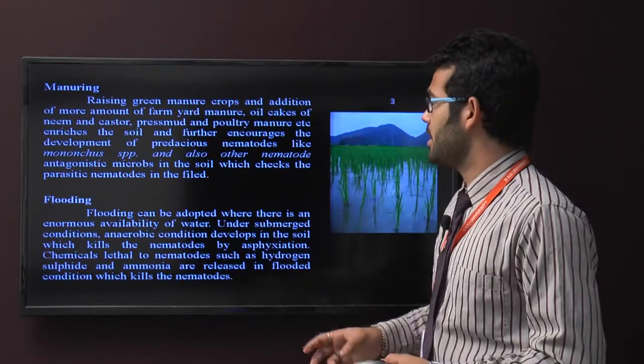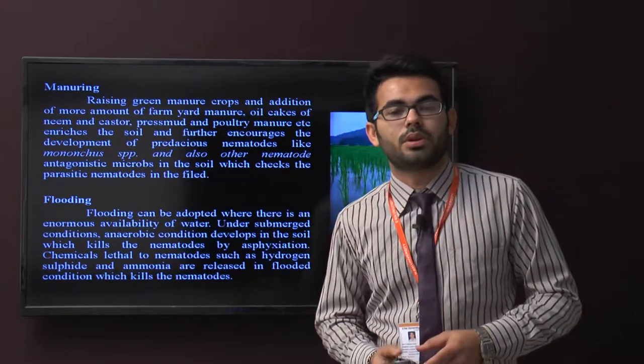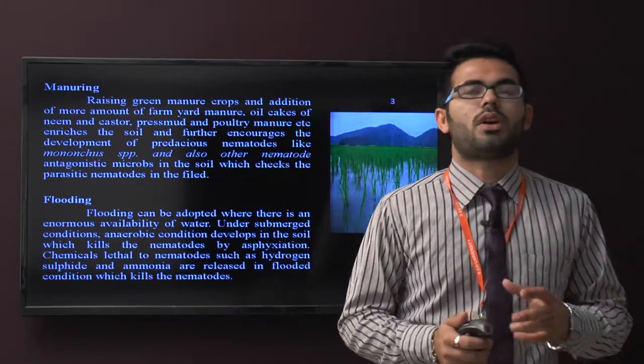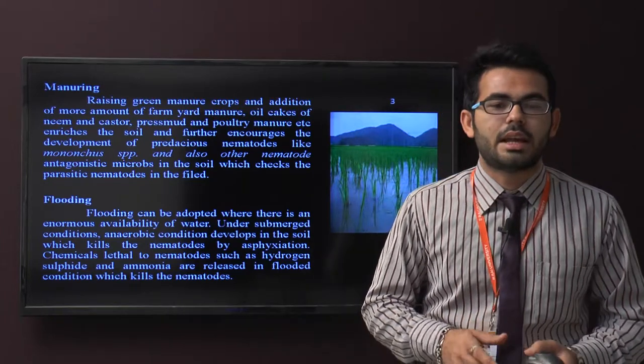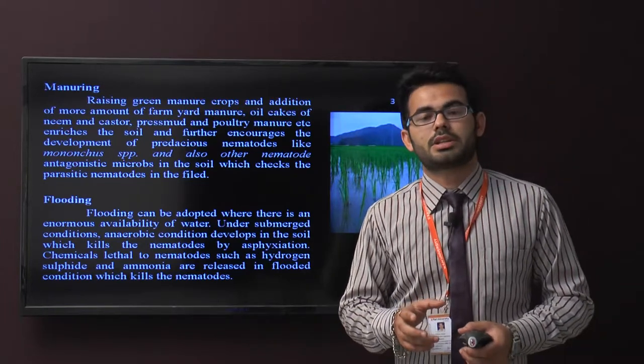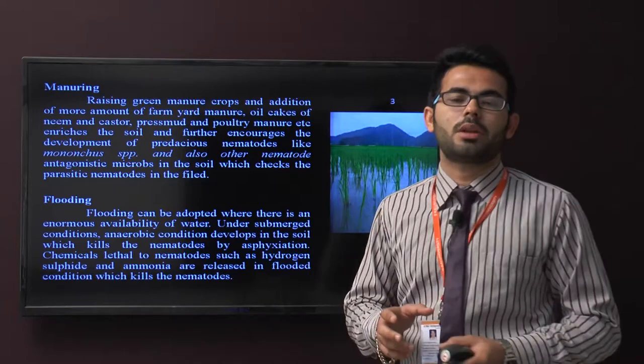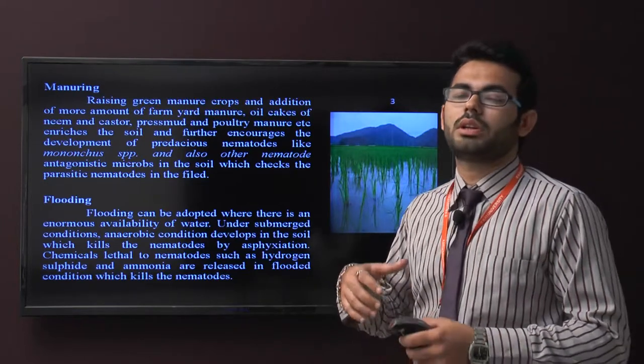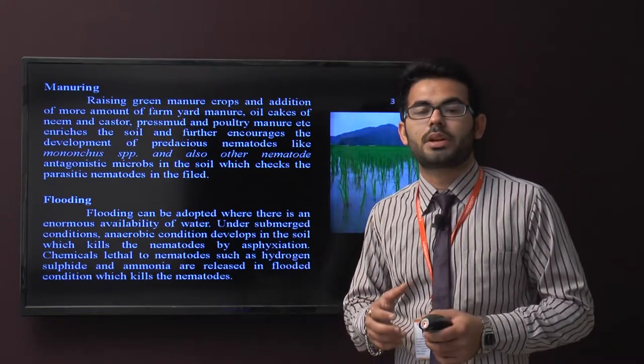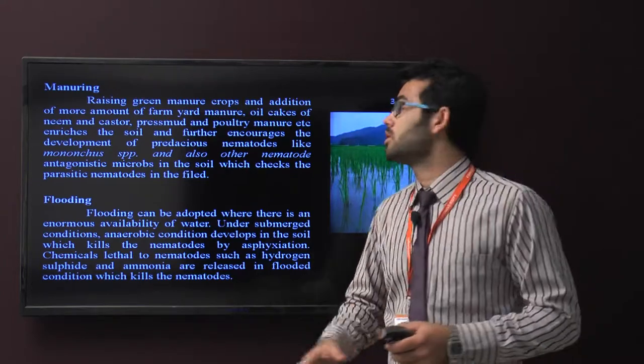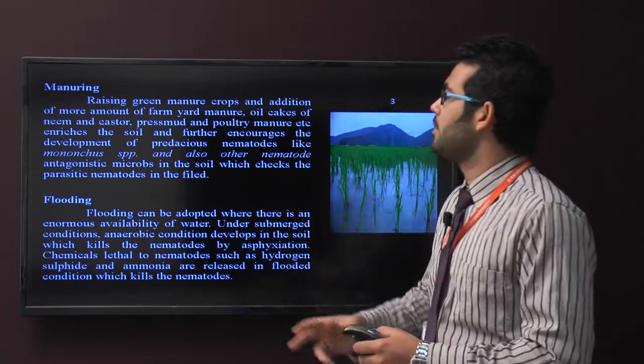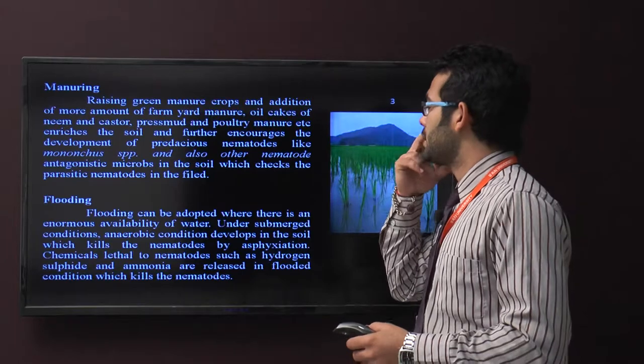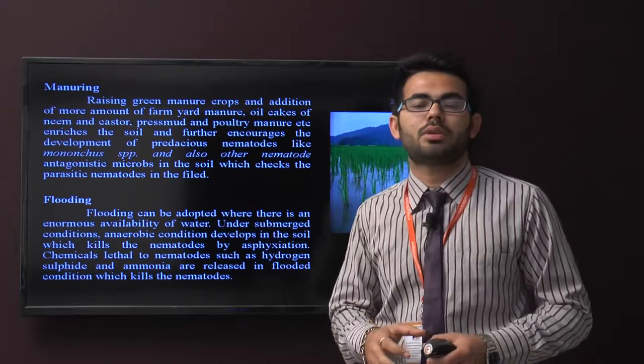Next one is manuring. The raising of green manure crops and the addition of more amounts of farmyard manure, oil cakes, neem and castor, press mud, and poultry manure increases and enriches the soil and further encourages the development of predacious nematodes like Mononchus species and also other nematode antagonistic microbes in the soil which checks the parasitic nematodes in the field.